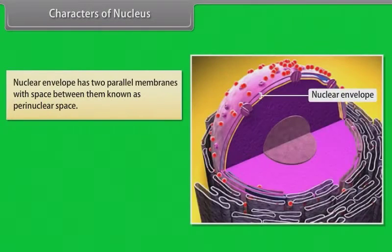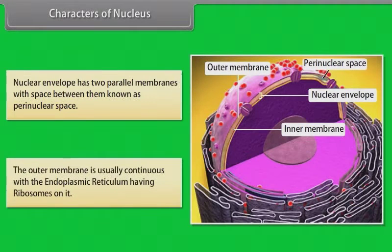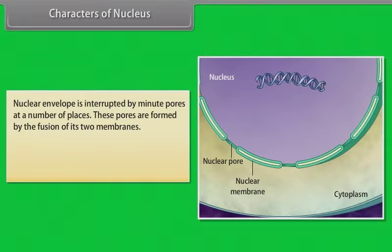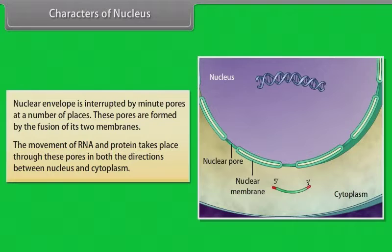The nuclear envelope has two parallel membranes with a space between them known as the perinuclear space. The outer membrane is usually continuous with the endoplasmic reticulum and has ribosomes on it. The nuclear envelope is interrupted by minute pores at a number of places, formed by the fusion of its two membranes. The movement of RNA and protein takes place through these pores in both directions between the nucleus and the cytoplasm.